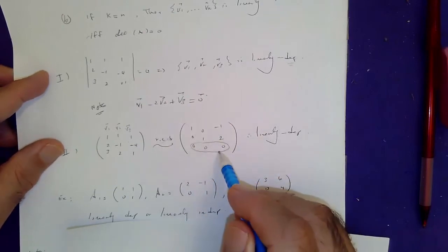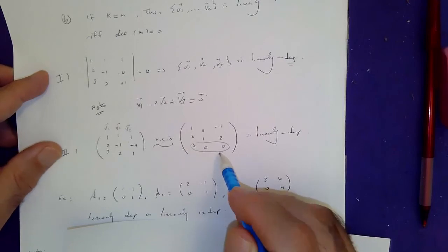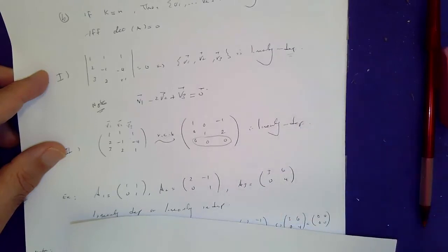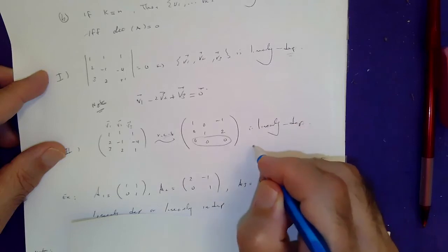Row three has a row of zeros. So therefore, you can go back and say, aha, the given matrix vectors, that is.